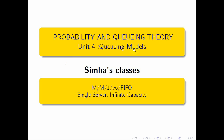Hi students. We are going to talk about M/M/1 classes in priority and queuing theory. Unit 4, queuing models, we are going to discuss. The first model is: Poisson Arrival, Exponential Servers, Single Server and Infinite Capacity. So model 1 is under the single server infinite capacity.